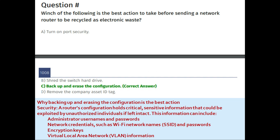Next question: which of the following is the best action to take before sending a network router to be recycled as electronic waste? Option A: turn on port security, Option B: shred the switch hard drive, Option C: backup and erase the configuration, Option D: remove the company asset tag ID. The correct answer is C: backup and erase the configuration.